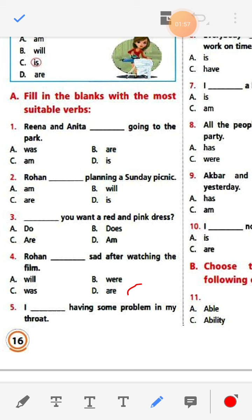Here the answer is 'are' because it is a plural noun. Rina and Anita are two persons, so: Rina and Anita are going to the park.